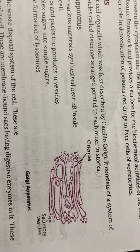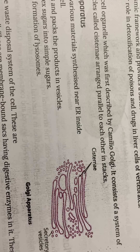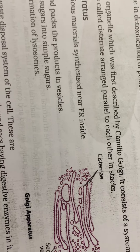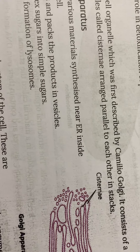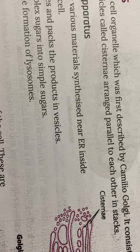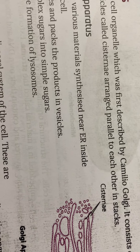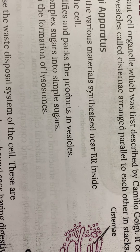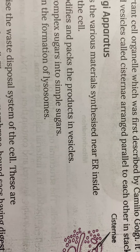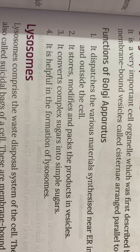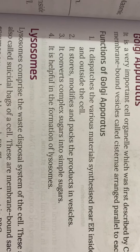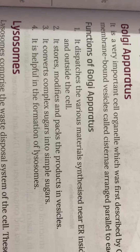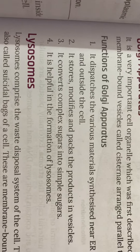The function of the Golgi apparatus is that it helps in the storage, packaging, and dispatching of material in the cell. For example, the endoplasmic reticulum helps in the formation of proteins, and the Golgi apparatus then transports and dispatches those proteins throughout the cell. So the Golgi apparatus stores, packages, and dispatches the materials synthesized by the endoplasmic reticulum. It also helps in the formation of the lysosome.